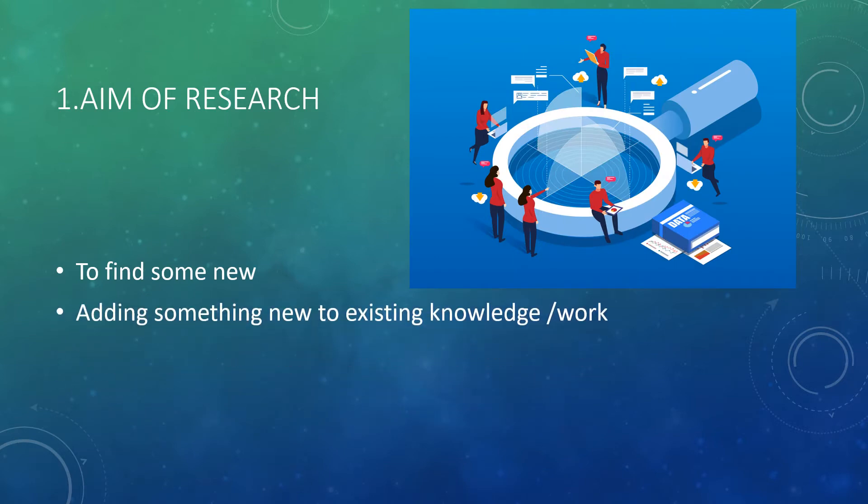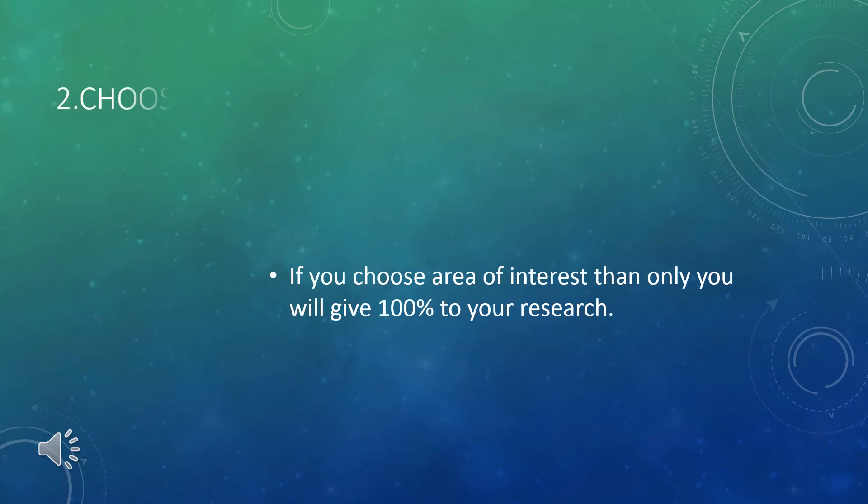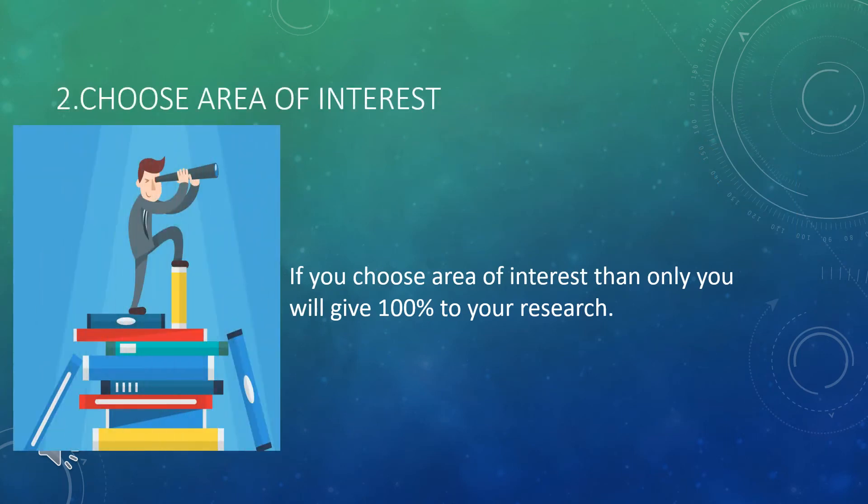The aim of research is to find something new and adding something new to the existing knowledge or work. That is the aim of research. Second is choose area of interest. If you are interested in a particular area, then only you can give 100% to your research.